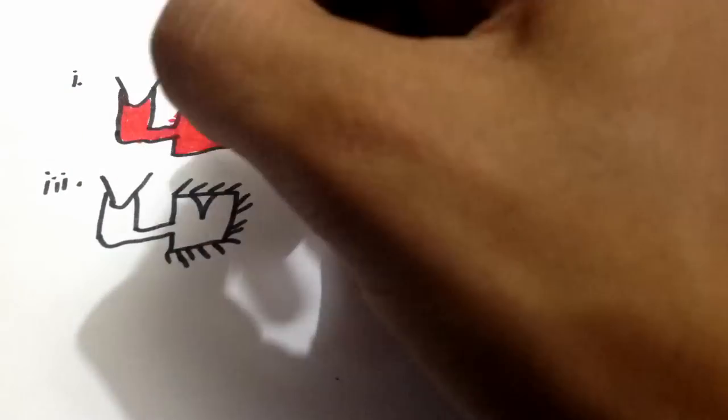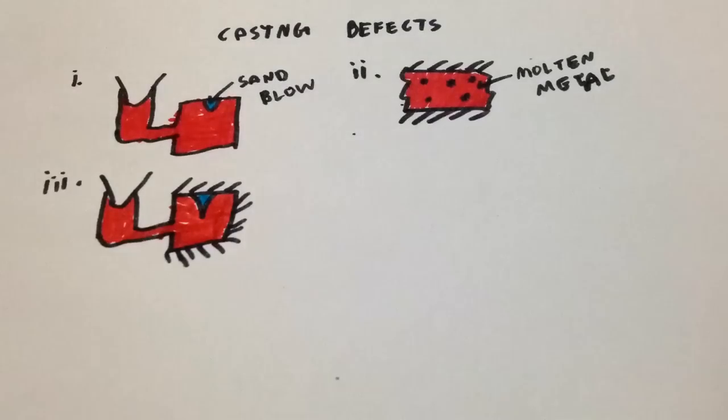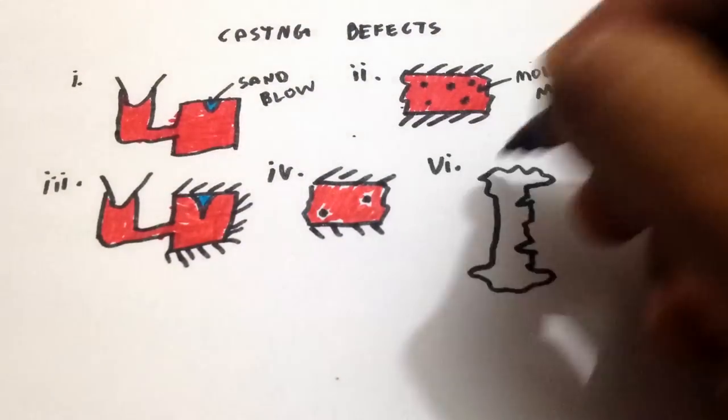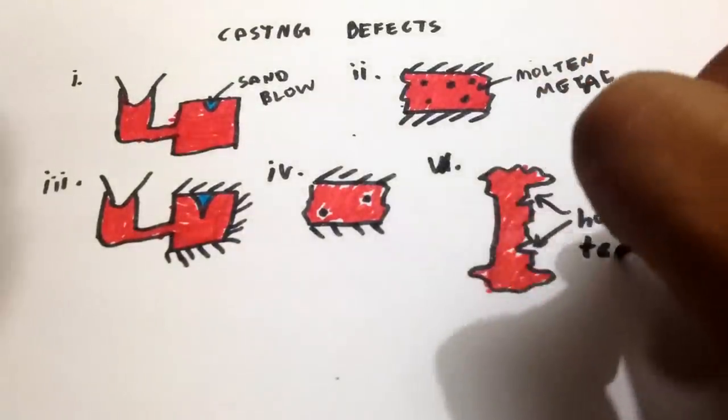Third, shrinkage is caused by faulty gating, faulty rising, improper chilling and can be remedied by ensuring proper solidification. Fourth comes inclusions which are again caused due to faulty gating system and can be remedied by modifying the same. Last comes hot tears or hot cracks which are caused due to the lack of core or mould collapsibility and can be remedied by improving the core and mould collapsibility.